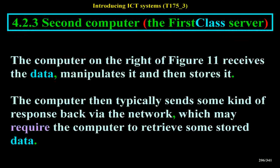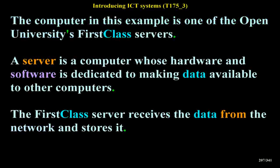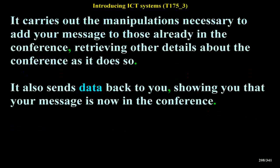The computer on the right of Figure 11 receives the data, manipulates it and then stores it. The computer then typically sends some kind of response back via the network, which may require it to retrieve some stored data. The computer in this example is one of the Open University's First Class servers — a server is a computer whose hardware and software is dedicated to making data available to other computers. The First Class server receives the data from the network, stores it, carries out the manipulations necessary to add your message to those already in the conference, and sends data back to you showing your message is now in the conference.